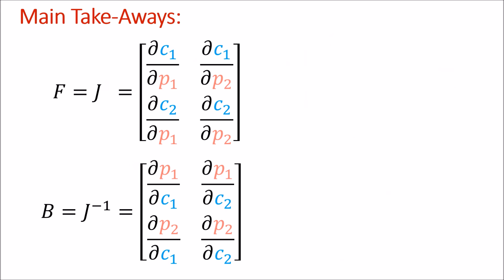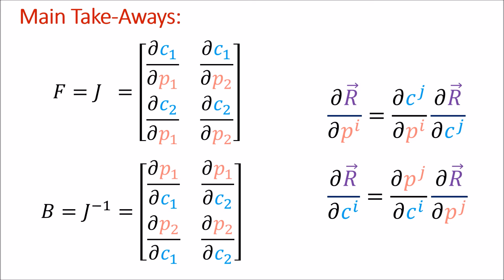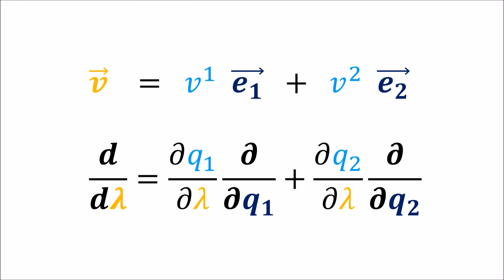The main takeaway of this video is that the Jacobian is just the forward transform and the Jacobian inverse is just the backward transform, and we get the coefficients using the multivariable chain rule. In the next video, we're going to cover why derivatives are vectors and show that the components of these vectors are contravariant.